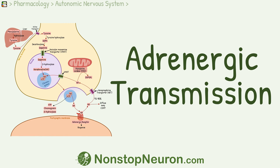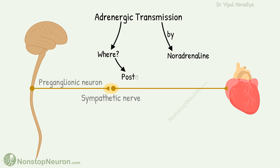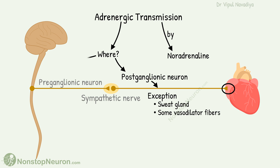In this video we will talk about adrenergic transmission. By adrenergic transmission we mean neurotransmission by noradrenaline. It is mainly seen in the sympathetic postganglionic neuron. However, not all postganglionic sympathetic neurons show adrenergic transmission — there are some exceptions like sweat glands and some vasodilator fibers. Certain areas of the brain also show adrenergic transmission.